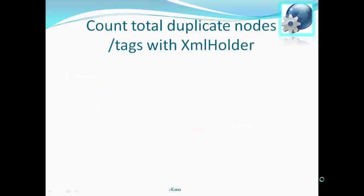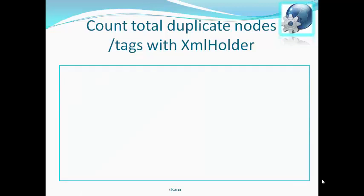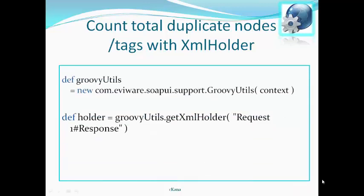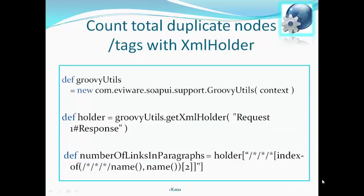Counting total duplicate nodes with XML holder: we do the same thing as in the previous approach. First we create a groovyUtils object, then use the getXmlHolder method. Once we have the holder variable, we use the same XPath expression as the index of that holder, and find the number of links — meaning the total number of duplicates in a particular XML string or file. These are the three steps to find total duplicate nodes with XML holder.